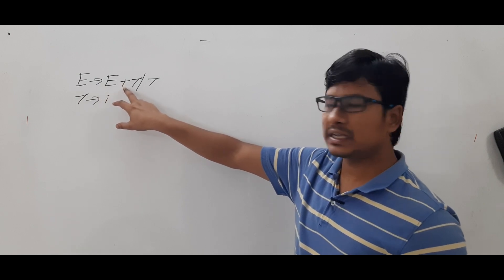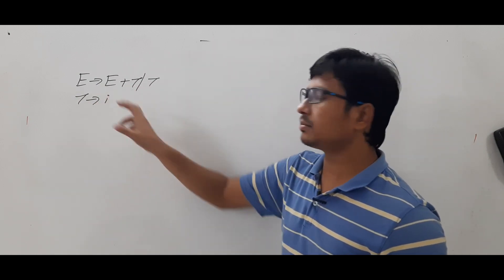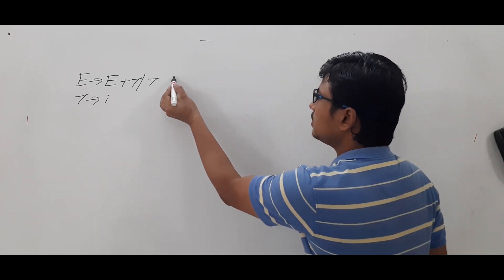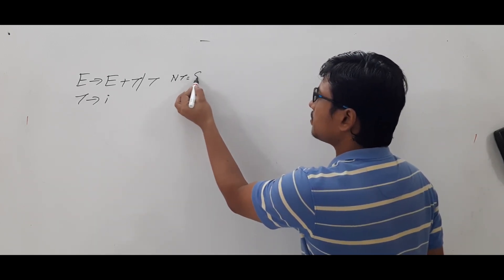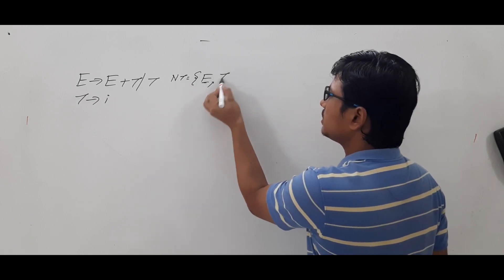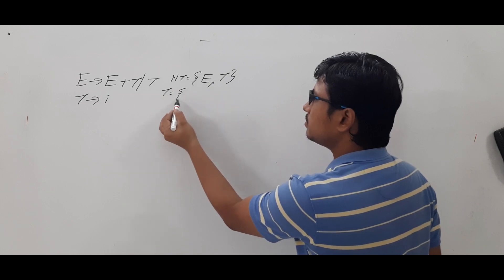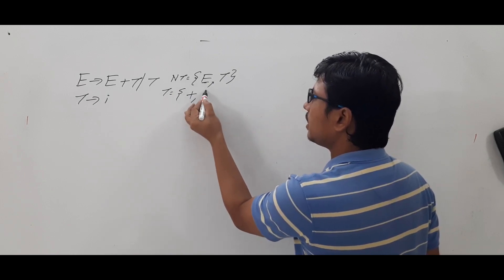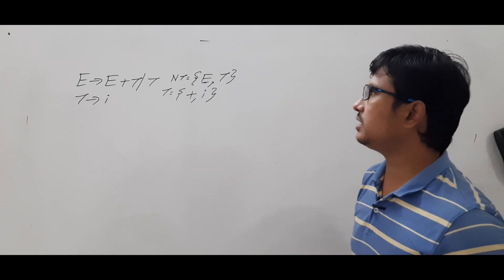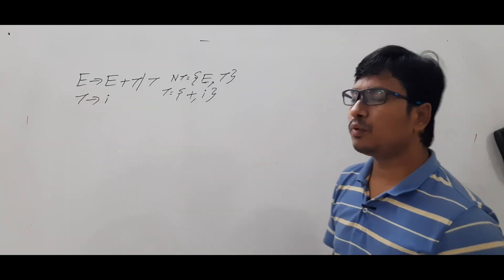I have taken a grammar: E → E + T | T, T → i. Can you identify what the non-terminals are? The non-terminals from this grammar are E and T. What are the terminals? The terminals are plus, comma, and i. What is the start symbol? E is the start symbol.